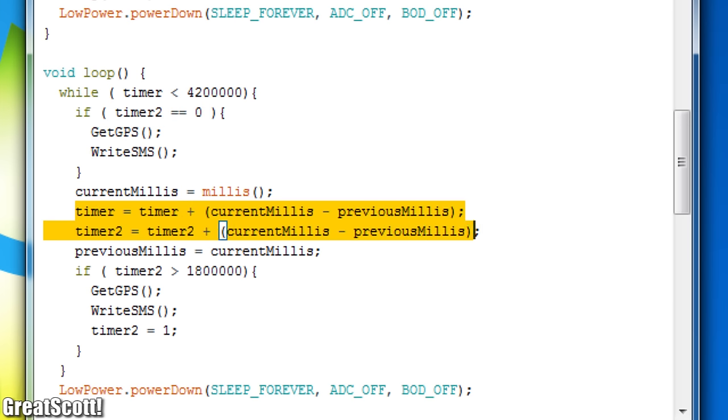And once timer 2 reaches a time of 30 minutes, it once again gets the GPS location, sends it and resets its own value. This counting up madness then repeats and eventually reaches the sleep mode after 70 minutes.